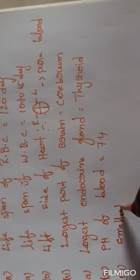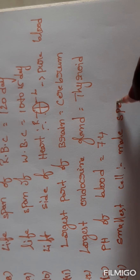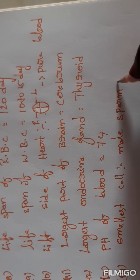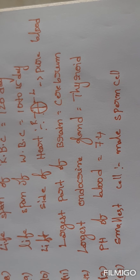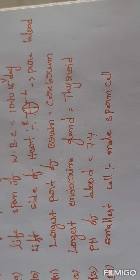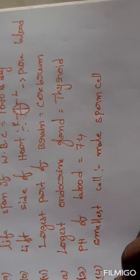Fourteenth: smallest cell in the human body. The smallest cell in the human body is the male sperm cell.